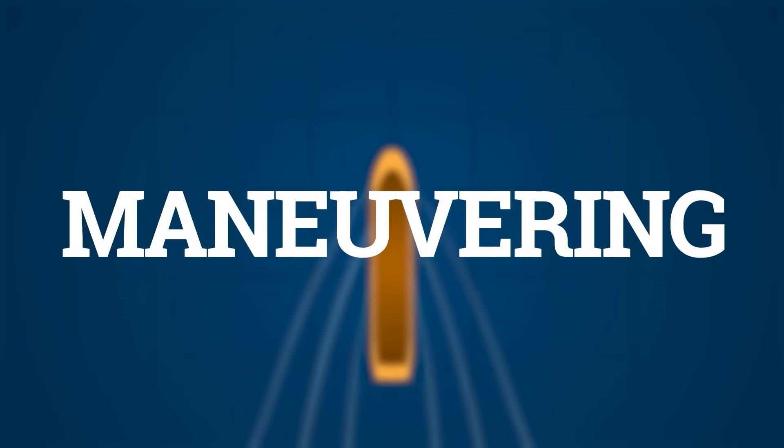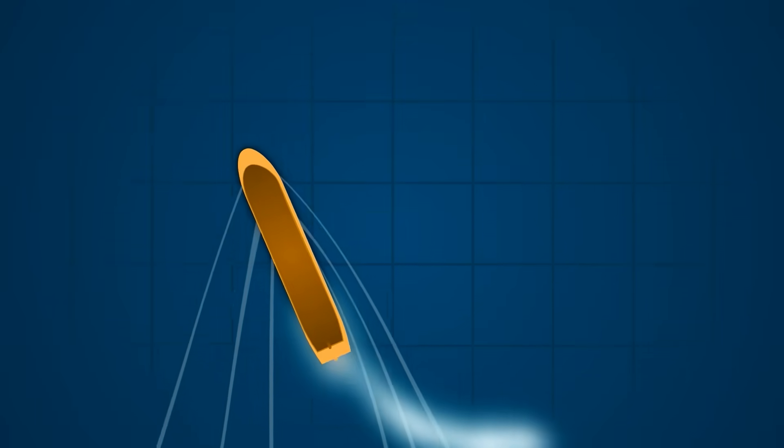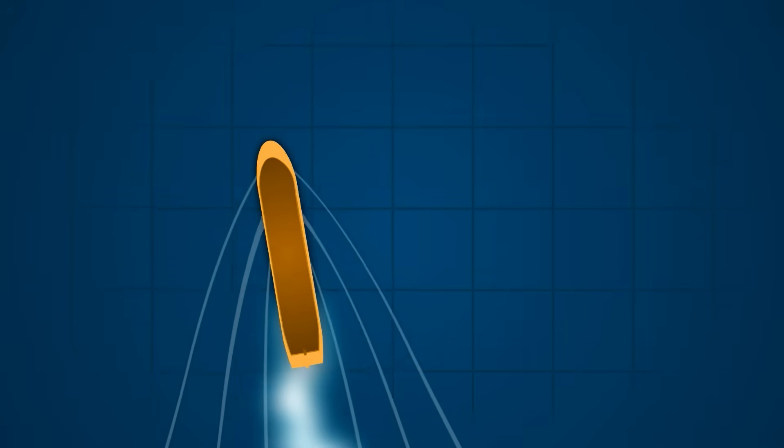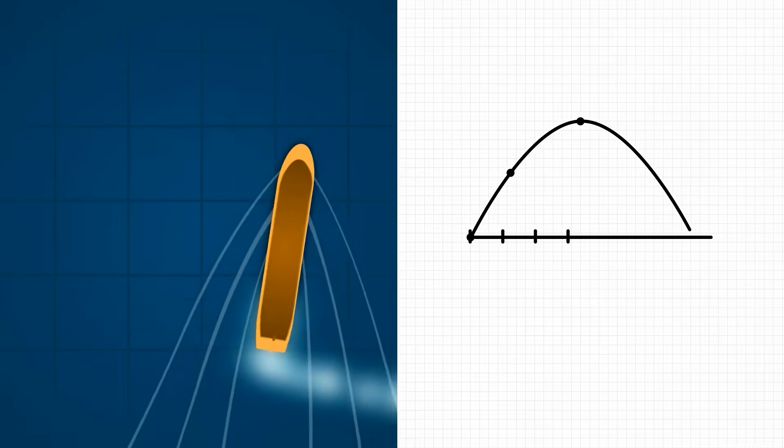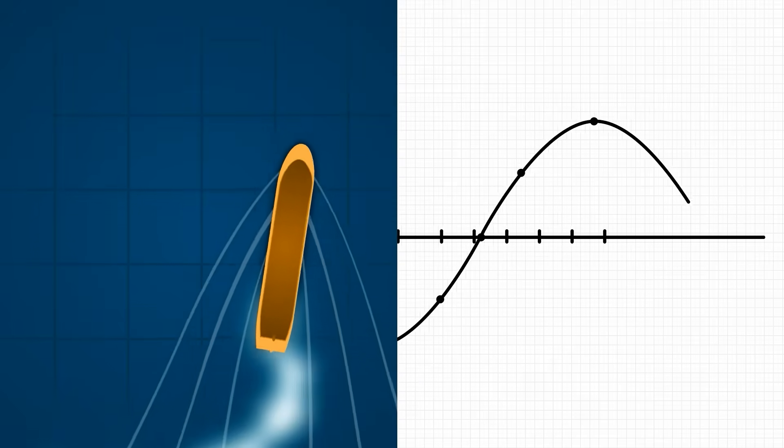Then, maneuvering. The model runs zigzags and turning circles. Every angle of heel, the sideways tilt of a ship when turning under wind or wave forces. Every overshoot, the amount the ship turns past its intended heading before stabilizing. Every delay is measured.